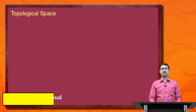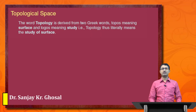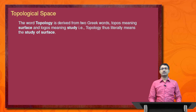Welcome students. Today I shall discuss about the topic of general topology. First of all, what is topology? Topology is nothing but a composition of two Greek words: one is 'topos' meaning surface, and another is 'logos' meaning study. So basically topology is nothing but a study of surface.